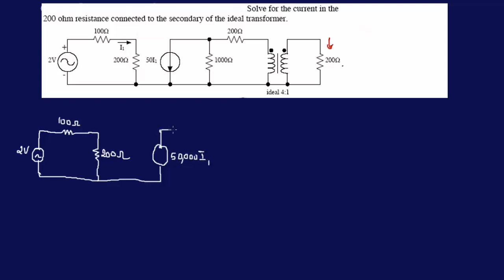Now, instead of having a parallel, now we have series. So we just transform this into the same thing. Okay, so we have our 200 ohm in the primary.